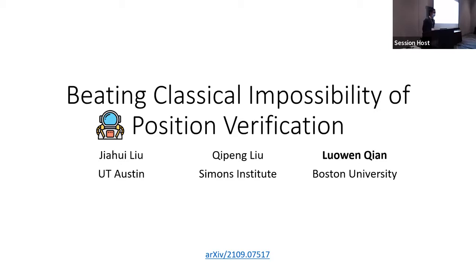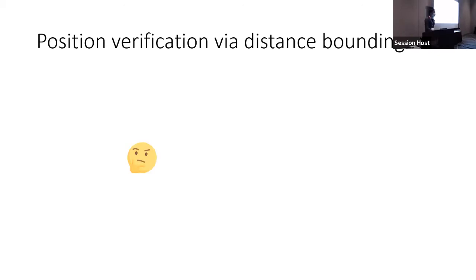I will be talking about position verification. Let me start by explaining what position verification is. Imagine you are an astronaut and there is a ground mission station that wants to verify your position in a cryptographically secure way. For this talk I'll use the notion of provers and verifiers — the prover, in this example, is the astronaut who wants to convince the verifiers of his location.